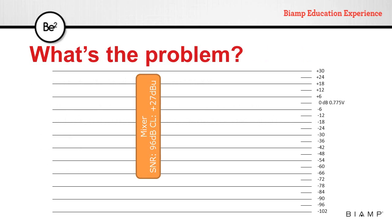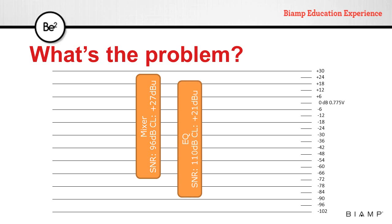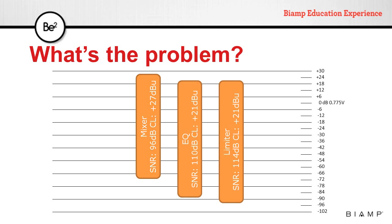For instance, let's suppose we have a mixer with a signal-to-noise ratio of 96 dB and a clipping level of plus 27 dBu. If we draw this on a graph, we can see the range of signals that mixer can handle. We could do the same for the other components — for example, an equalizer with a signal-to-noise ratio of 110 dB and a clipping level of plus 21 dBu, and a limiter with a signal-to-noise ratio of 114 dB and a clipping level of plus 21 dBu.